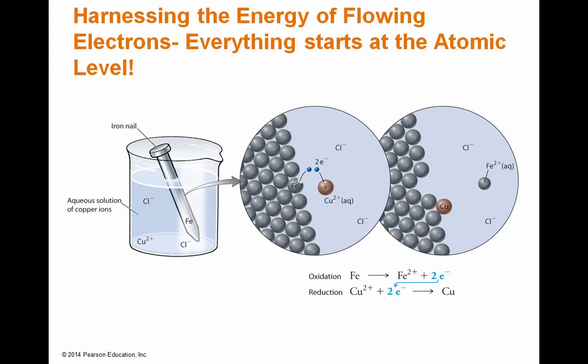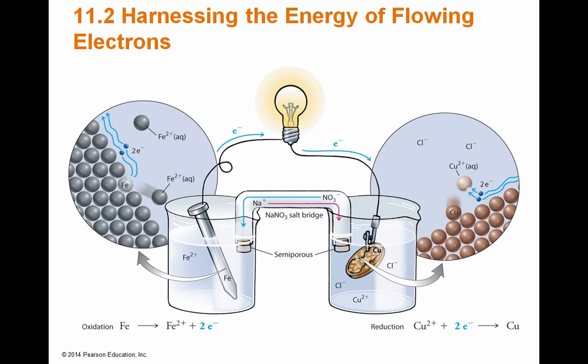So what is a battery? It's harnessing the energy of flowing electrons. Everything starts at the atomic level. In the last lecture we talked about how electrons flow with oxidation and reduction half reactions — all of that is happening at the atomic level. Even though you might have a big iron nail, you're not oxidizing the whole thing at once. Individual electron transfers are happening between one copper atom and one iron atom, and those electrons flowing in a chain reaction power your light bulb.